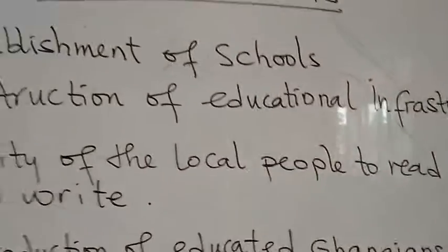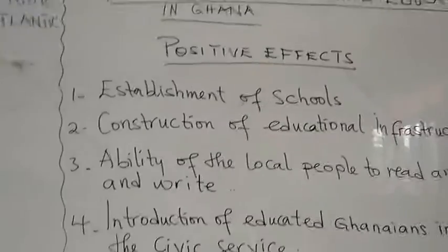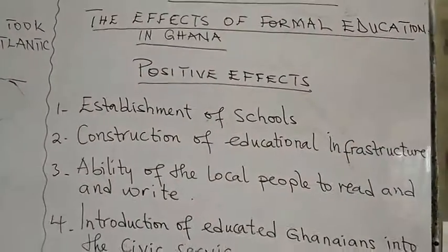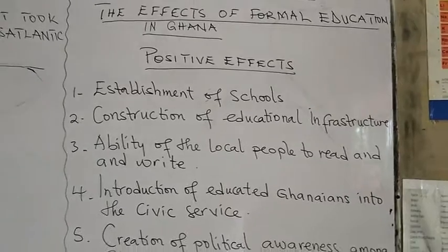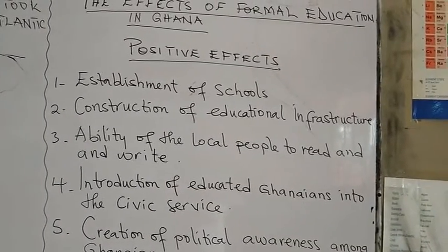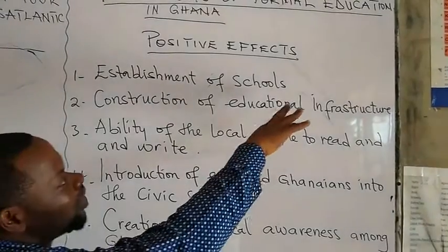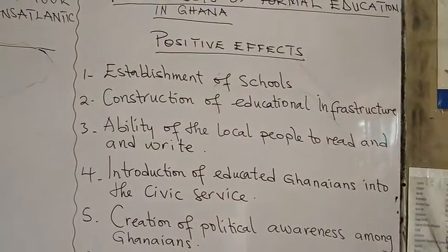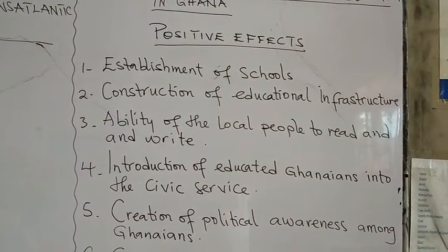Till today, as a result of the introduction of formal education, we have the establishment of schools. Because of formal education — formal education is what is happening in the classroom — we saw the establishment of schools, colleges, and which later changed to universities.